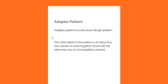The main intent of this pattern is to allow two classes to work together which would not otherwise due to incompatible contracts. As the name suggests, it is used to adapt one type into another — that is the bottom line of this particular design pattern.